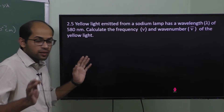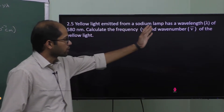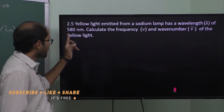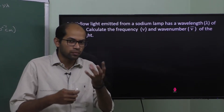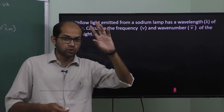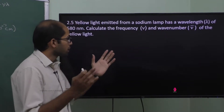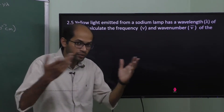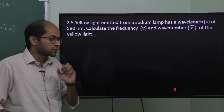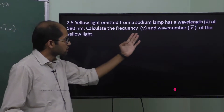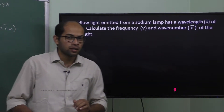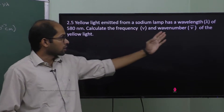First question: Yellow light emitted from a sodium lamp has a wavelength lambda of 580 nanometers. Calculate the frequency (nu) and wave number (nu-bar) of the yellow light.